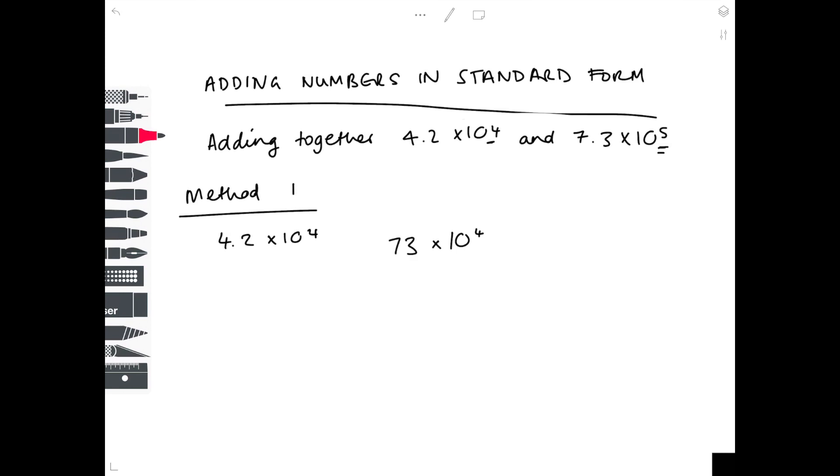I'm now going to make 7.3 times 10 to the 5 to the power of 4, which means this now needs to be 73 times 10 to the 4. Because they're the same power you can now just add the first numbers together. So you do 4.2 plus 73 - make sure those decimal points are lined up. 4 plus 3 is 7, so you have 77.2, which would be 77.2 times 10 to the 4.